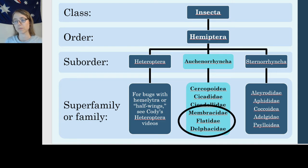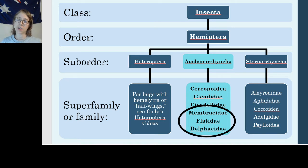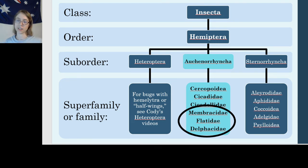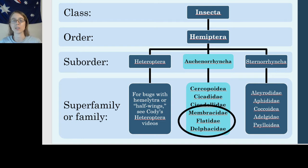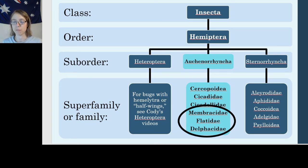The last video about Cercopoidea, Cicadellidae, and Cicadidae — the thing those families all had in common was this enlarged clypeus, or the upper lip of an insect. That enlarged clypeus has grooves in it, making their face look similar to the grille of a car. These last three families I will cover today — Membracidae, Flatidae, and Delphacidae — do not have that enlarged clypeus.